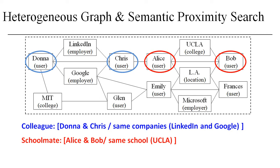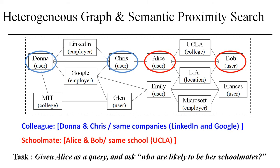Given this semantic difference, we can take a user object as the query, such as Alice, and ask: who are likely to be her schoolmates? As the answer, we shall rank Bob higher than the other users.